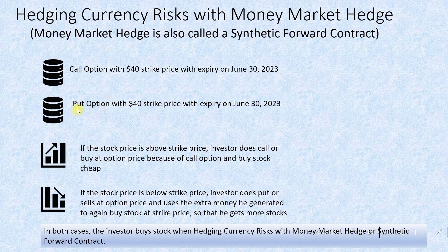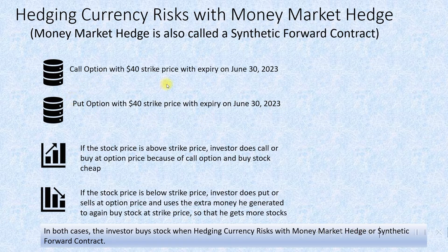There is also a put option written with a $40 strike price expiring June 30, 2023. So we have a call option and put option for the same strike price on the same day. On June 30, 2023, many things can happen.